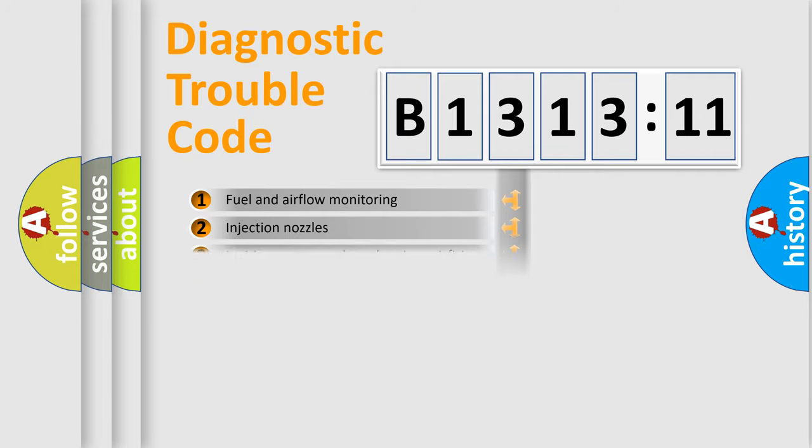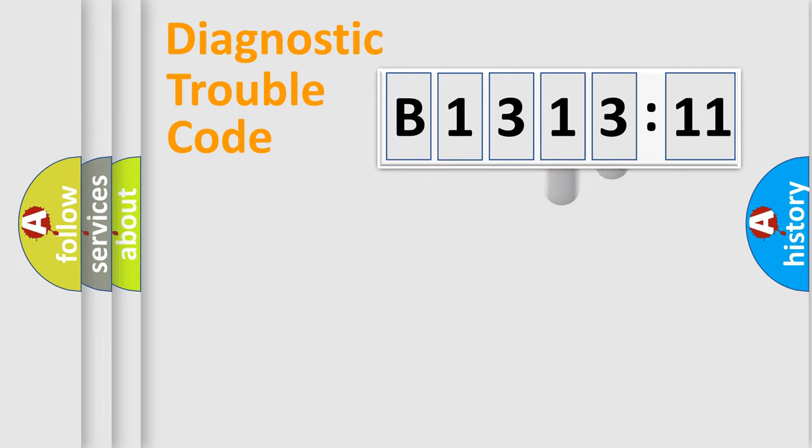The third character specifies a subset of errors. The distribution shown is valid only for the standardized DTC code.